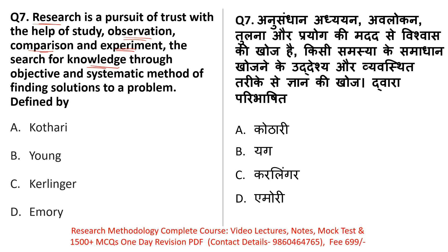We observe variables, perform experiments, and search for knowledge to fulfill our curiosity and increase knowledge through systematic step-by-step methods to find solutions to any problem. This definition of research, which covers all important aspects of research, was written by Kothari — an Indian scientist — who wrote this definition in 2006. Remember: Kothari's definition was given in 2006 and he is an Indian scientist. Such definition-based questions asking which scientist said what appear in exams. The right answer is Kothari.